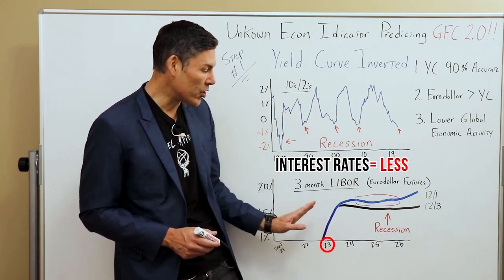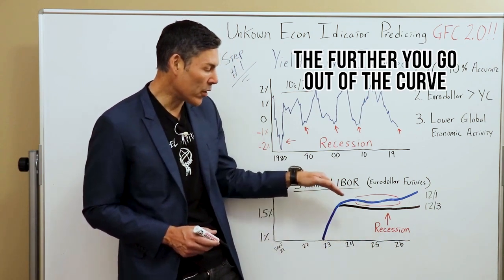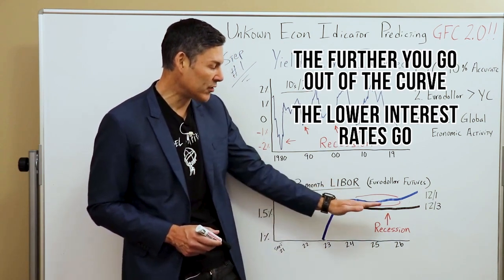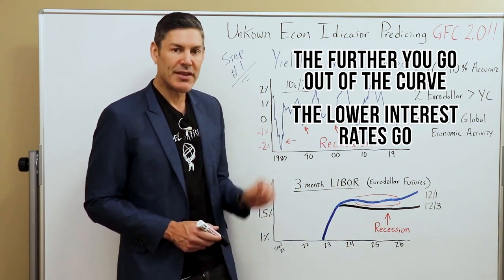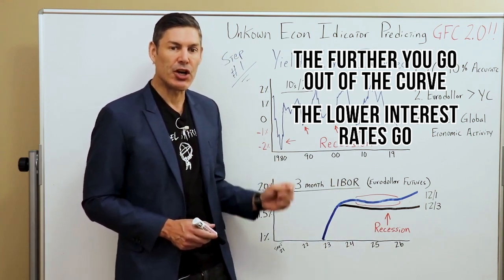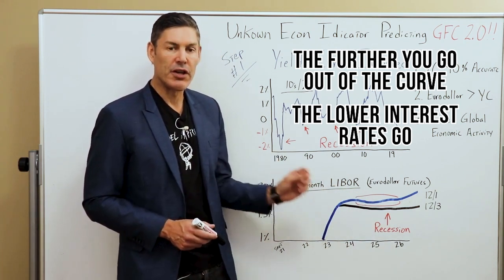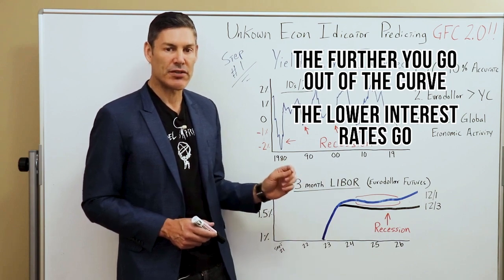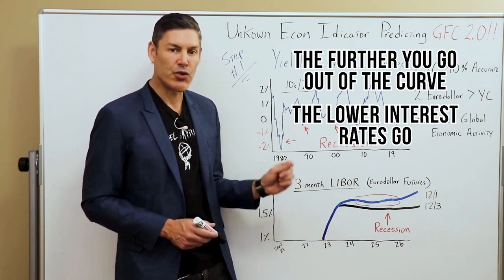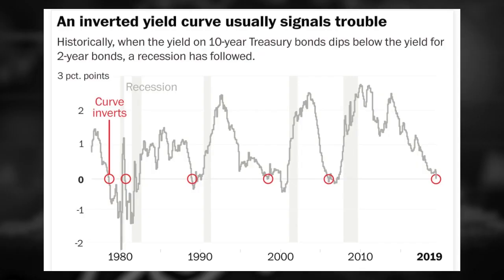So the further you go out the curve, the lower the interest rates go. This is an inversion in the euro-dollar futures curve — just like the inversion we saw in the Treasury market back in 1980, 1990, 2000, and the GFC.